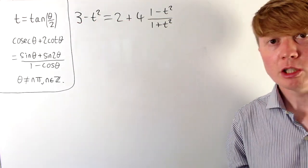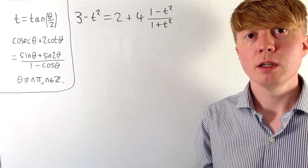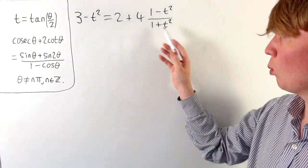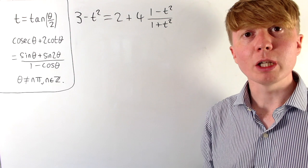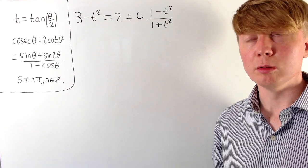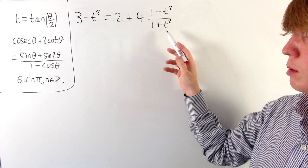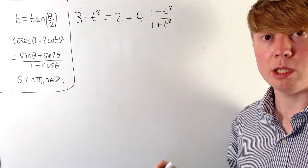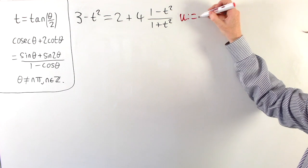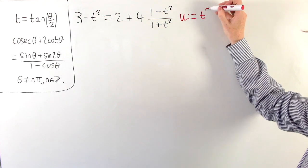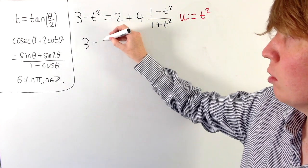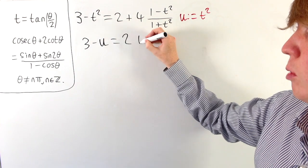Now we're ready to solve this equation. Multiplying both sides by (1 + t²) would give a quartic in t, but this is avoidable because only t² appears. So we introduce a substitution u = t², which reduces the equation to a quadratic: 2 + 4(1 − u)/(1 + u) = 3 − u.